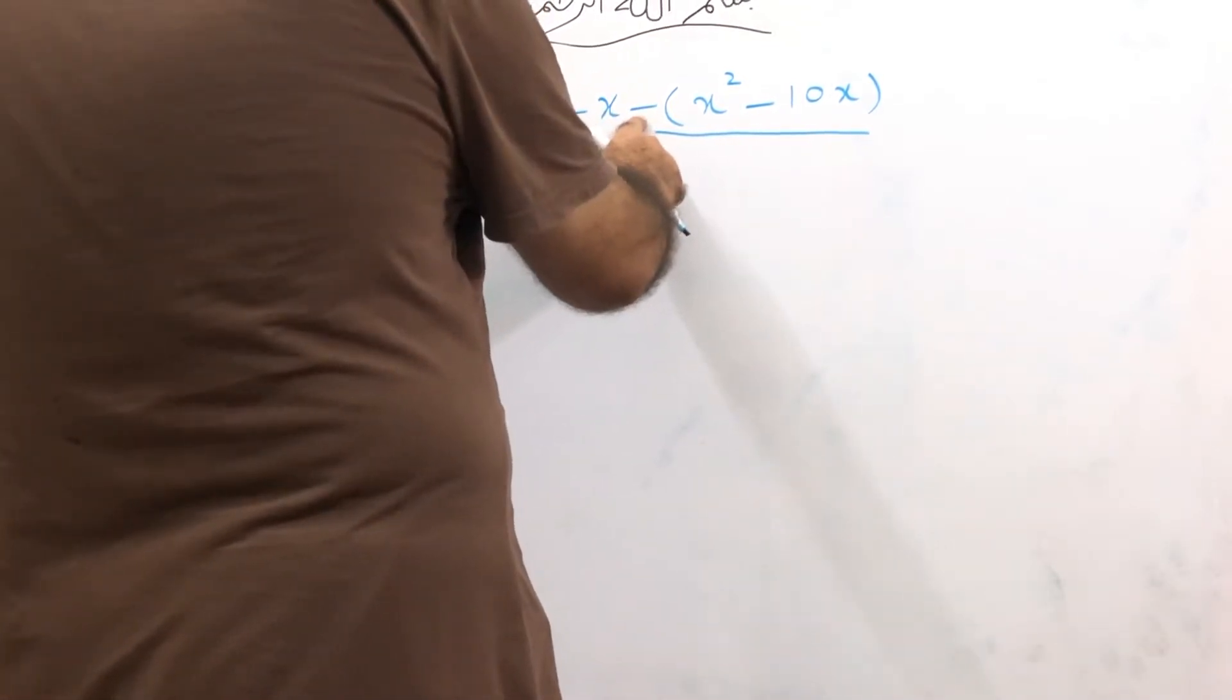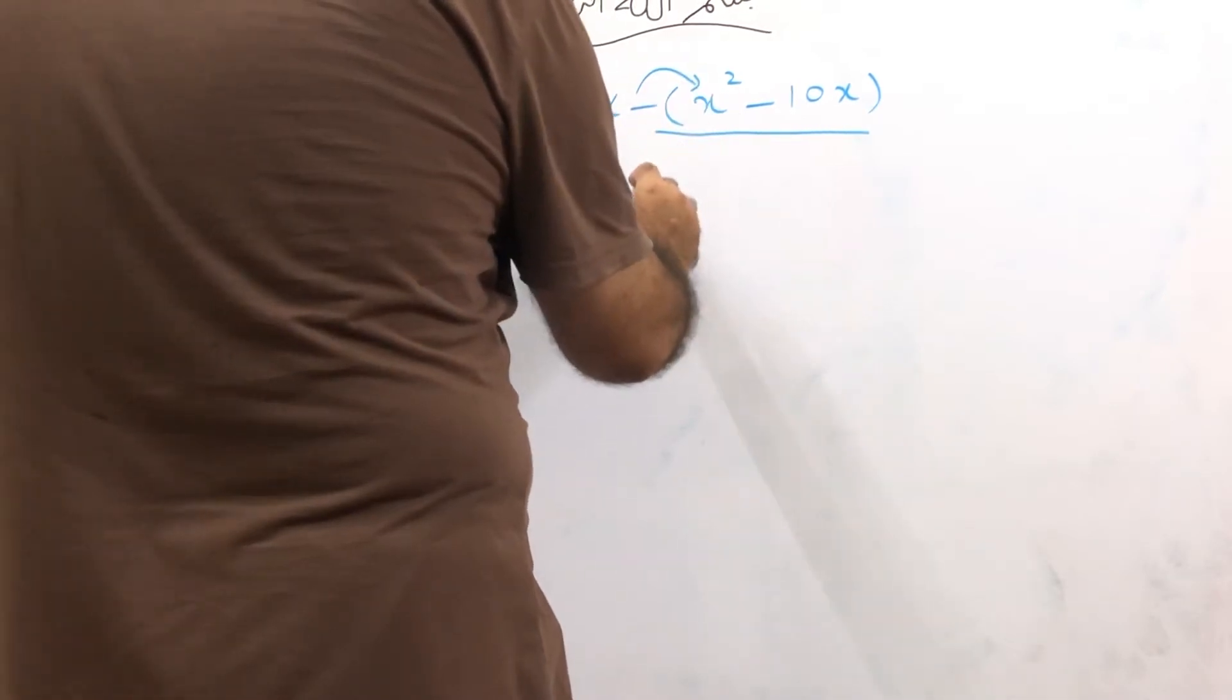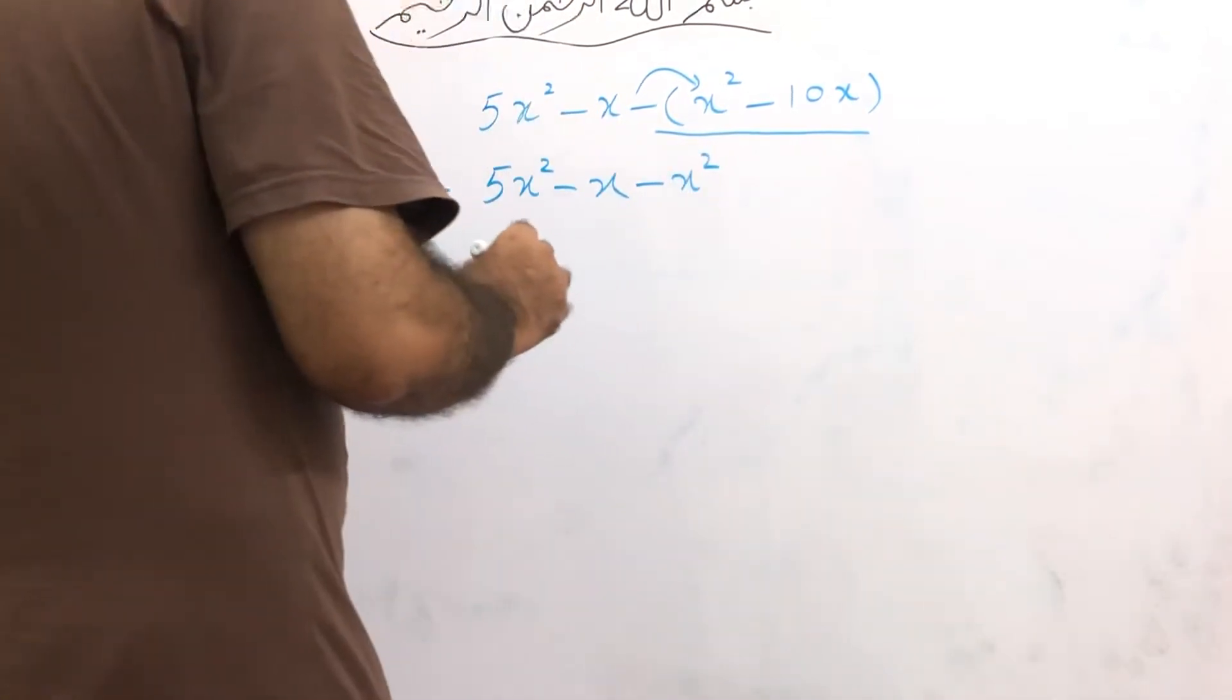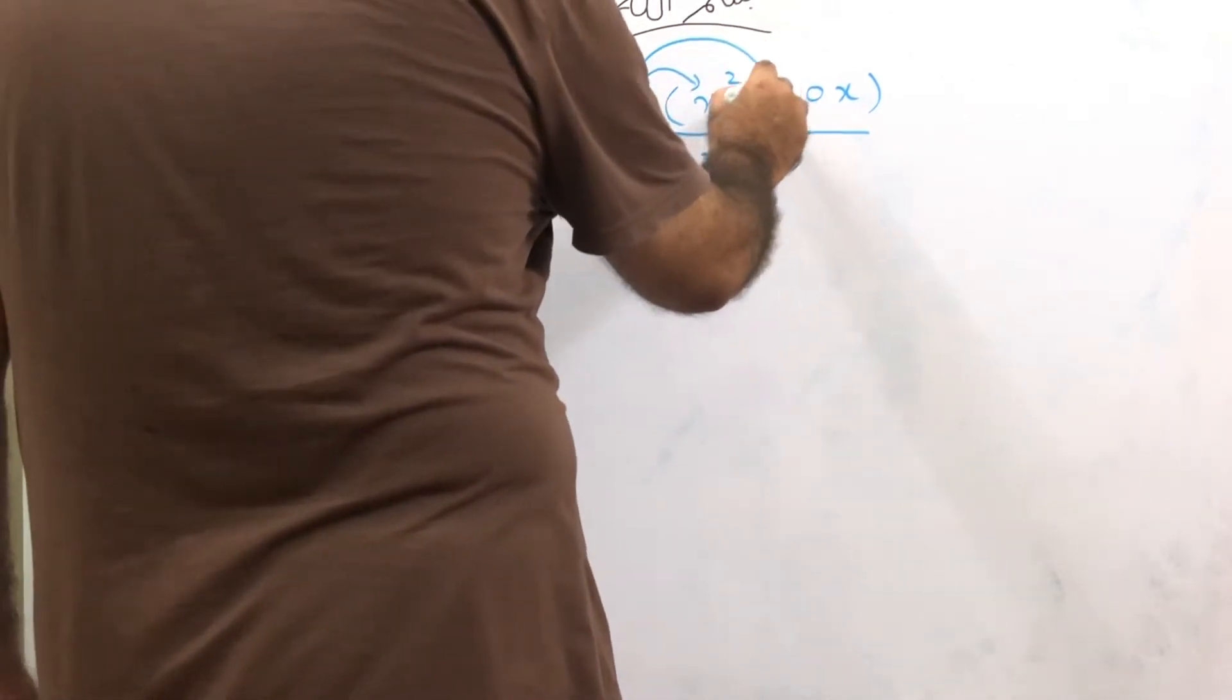This minus sign will be multiplied inside, so it becomes minus x² when we open the bracket.